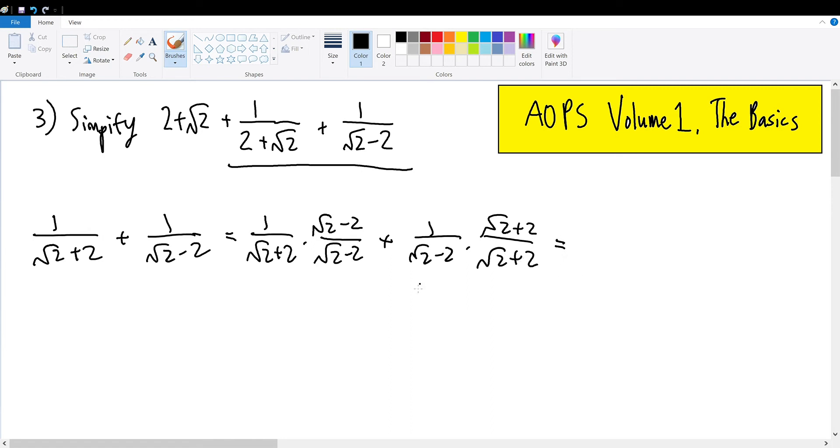If we combine the fractions with (√2 + 2)(√2 - 2) in the denominator, in the whole numerator we get (√2 - 2) + (√2 + 2). We see that we have two like terms of -2 and 2, therefore we can cancel them out and simplify the numerator.